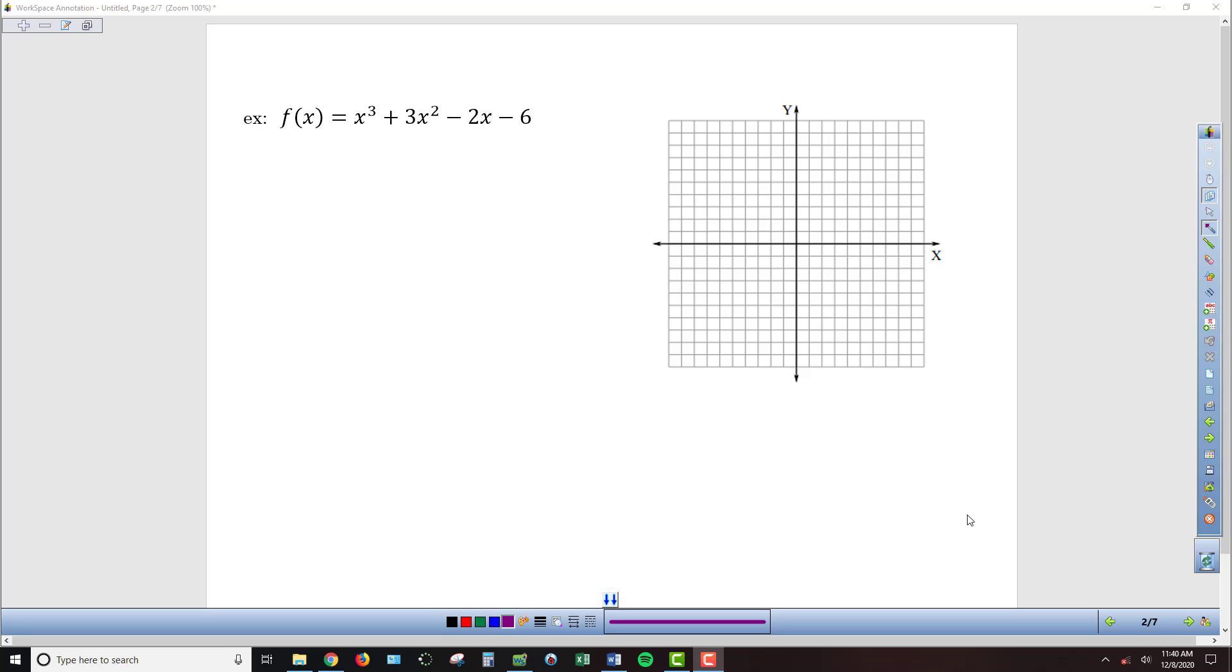The first thing we want to do is use our leading coefficient test to develop some expectation about what the general shape of the graph will look like. That leading coefficient test tells us that this graph is going to be a disco graph because we have an odd highest exponent. Then we also know, because the leading coefficient is a positive one, that we're going to be up on the right-hand side because if we plug in larger and larger positive values for x, we're going to get a positive result.